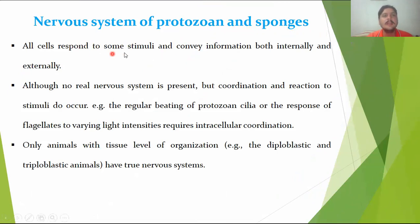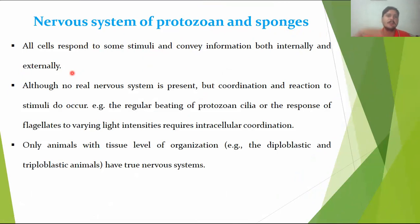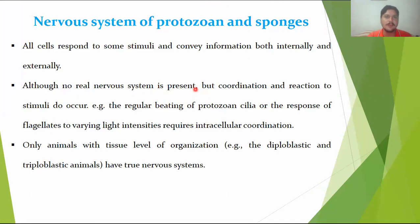All the cells respond to some stimuli and convey information both internally and externally. There are internal responses to both internal stimulus and external stimulus — both can produce a response. Although there is no real nervous system, no centralized nervous system, and no diffuse nervous system, the cells must still respond to some stimuli.